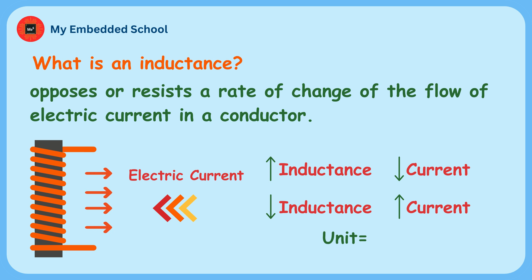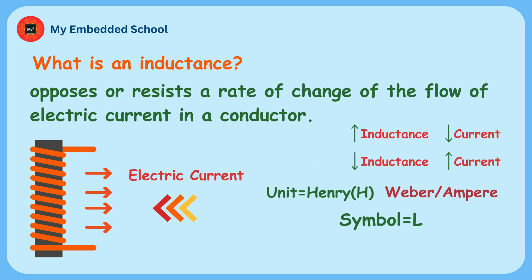The unit of inductance is Henry (H), and when we measure magnetic circuits, it is equivalent to Weber per Ampere. It is denoted by the symbol L.